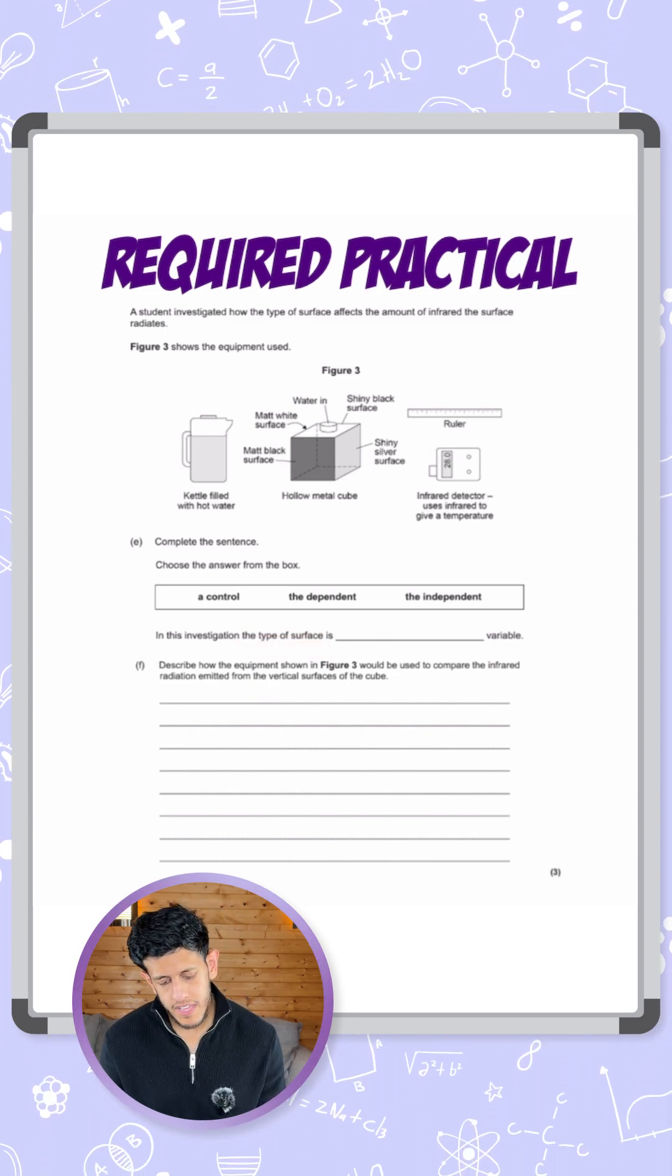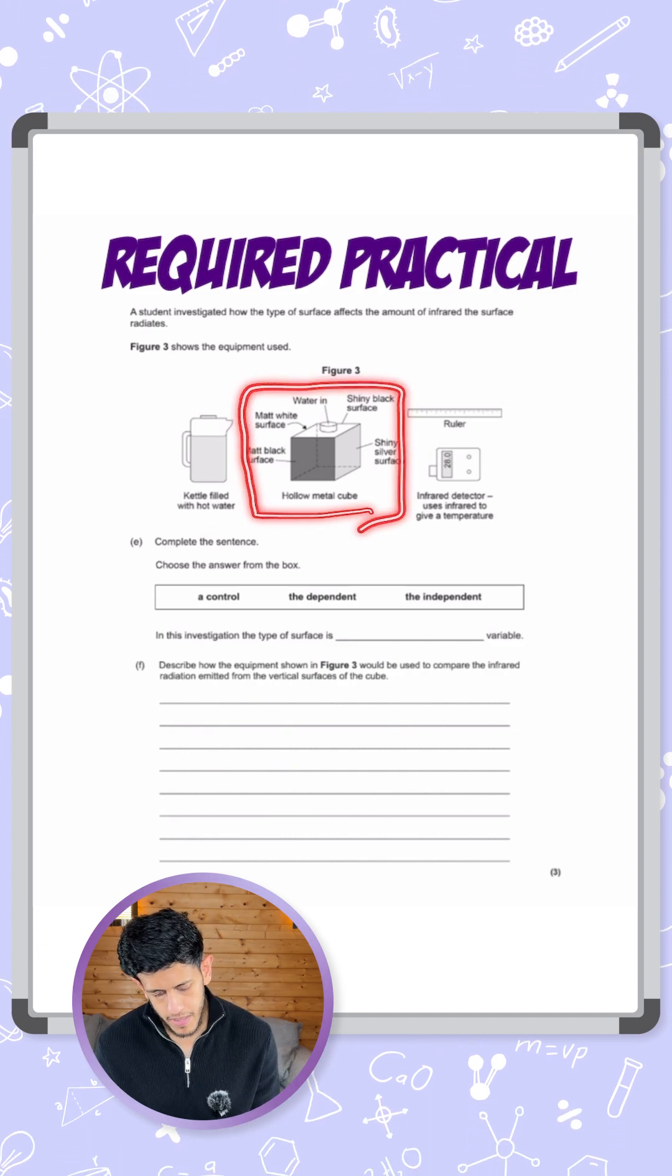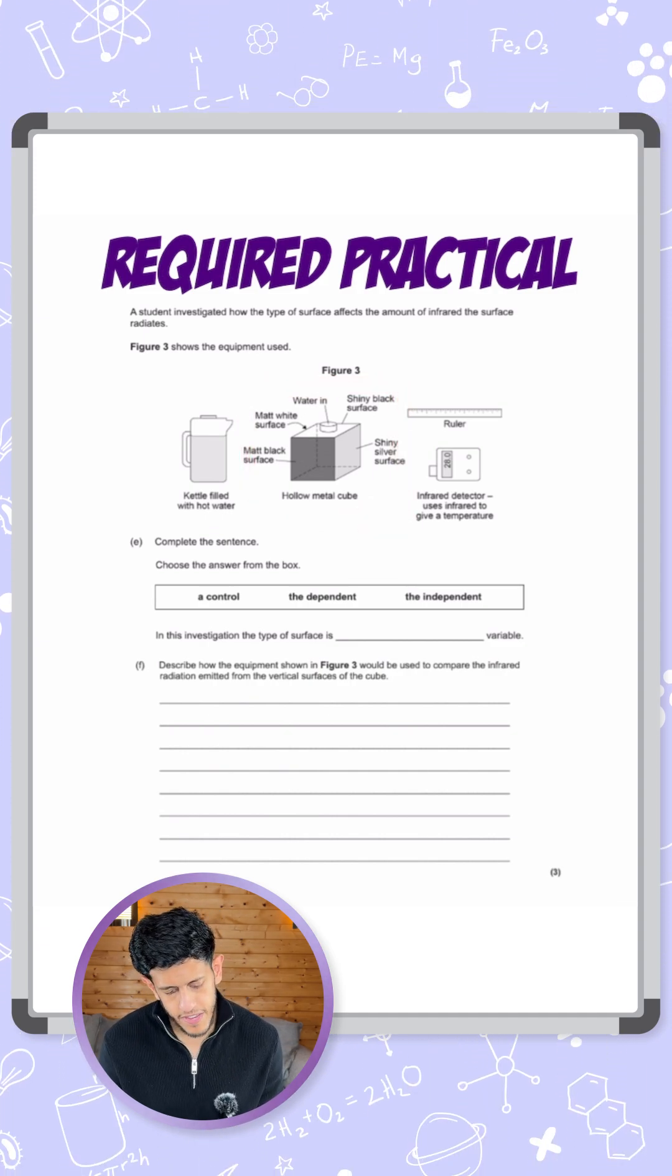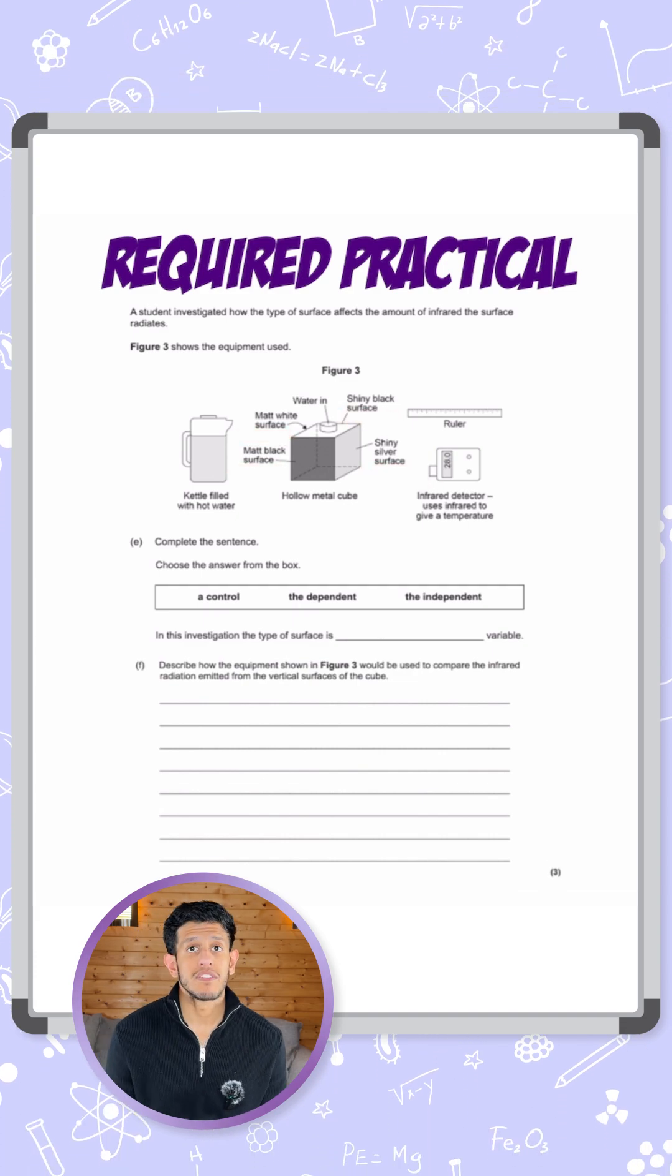So you can see here in the drawing we have a Leslie cube, which is this hollow metal cube, and with this cube it has different surfaces: matte black, matte white, shiny silver, and shiny black. So there's four different surfaces.